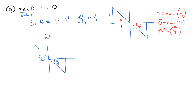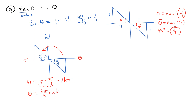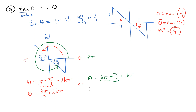Both reference angles are pi over 4, located in quadrants 2 and 4. The first theta, rotating just shy of pi, is pi minus pi/4 plus 2k pi, which equals 3pi/4 + 2k pi. The second, rotating just short of 2pi, is 2pi minus pi/4 plus 2k pi, which equals 7pi/4 + 2k pi. In both cases k is an integer — those are all the solutions.